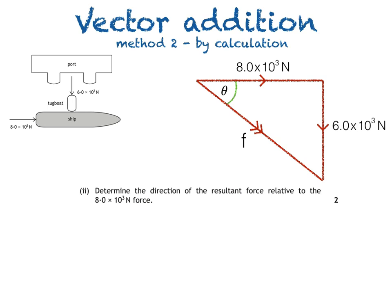I'm using the symbol θ. The tan function equals the opposite over the adjacent. So tan θ = (6.0 × 10³) ÷ (8.0 × 10³), which works out as 0.75.